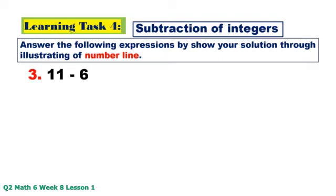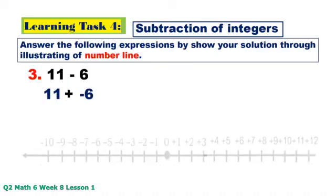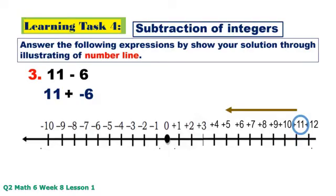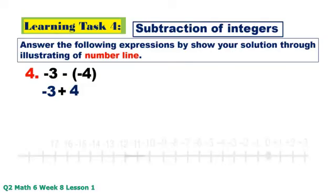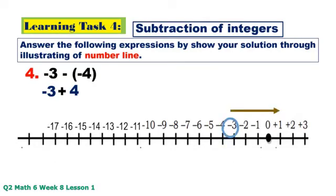Number 3: positive 11 minus positive 6, same as positive 11 plus negative 6 — counting 6 units to the left: 1, 2, 3, 4, 5, 6. The answer is positive 5. Number 4: negative 3 minus negative 4, same as negative 3 plus positive 4 — counting 4 units to the right: 1, 2, 3, 4. The answer is positive 1.